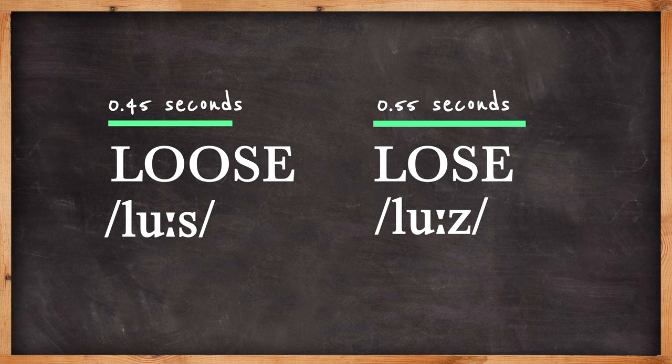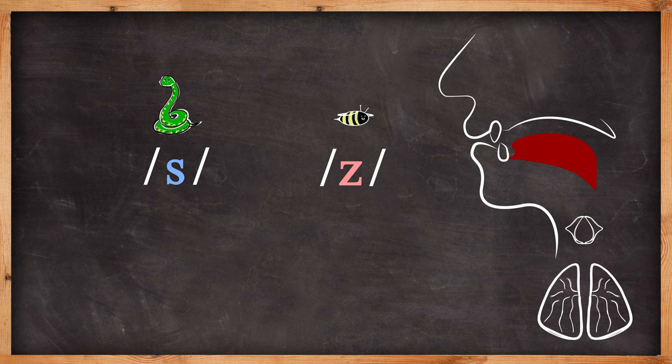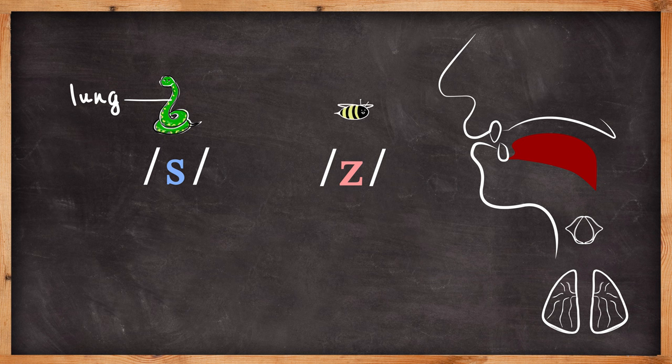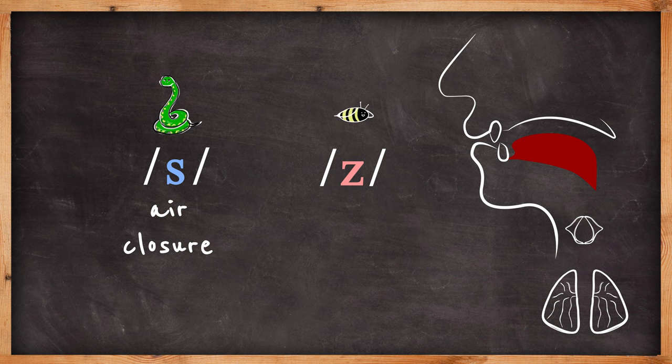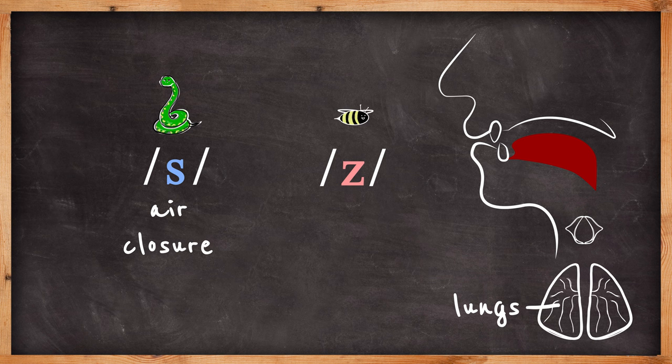In order to explain this, meet hissy snake and buzzy bee. The snake's sound is made using a lung to push air out of its body. It doesn't actually use its tongue when it does this. But what we can say is that this hissing sound is air and closure. In the snake's case, the closure is in the throat.